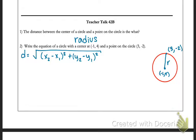Here's the distance formula. It's the square root of the quantity x2 minus x1 squared plus the quantity y2 minus y1 squared.